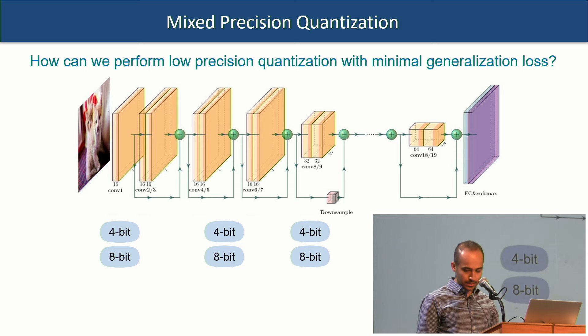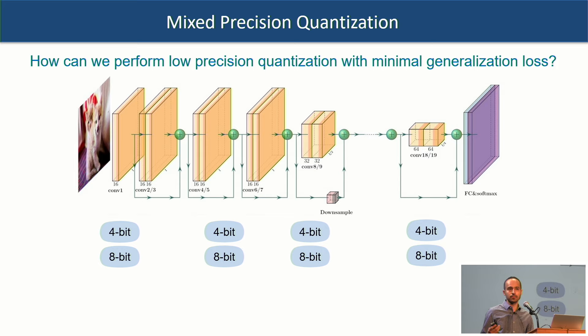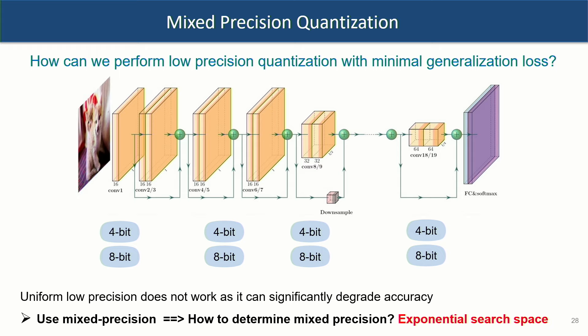The last topic is mixed precision quantization. Given a network like ResNet, you want to reduce precision as much as possible — perhaps even to binary — but you'll lose accuracy. Mixed precision quantization reduces precision for as many layers as possible while keeping sensitive layers at higher precision (say 8-bit). The challenge is that if you have two choices per layer, the search space is exponentially large — 2 to the number of layers.